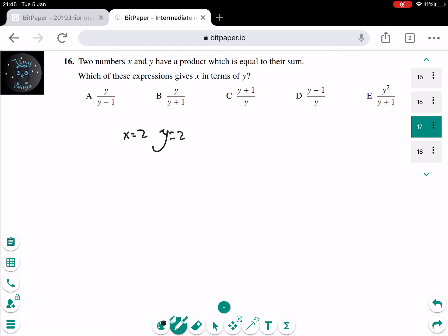For example, 2 over 2 minus 1 equals 2 over 1, so that works, so A might work.